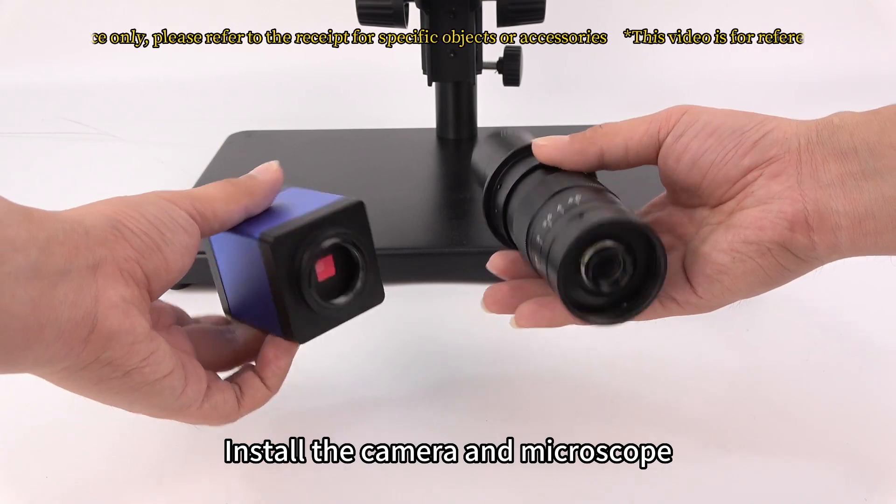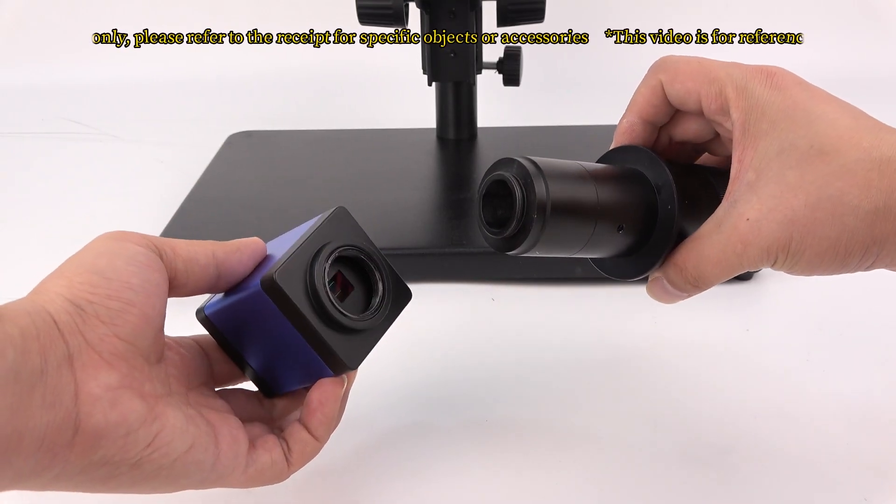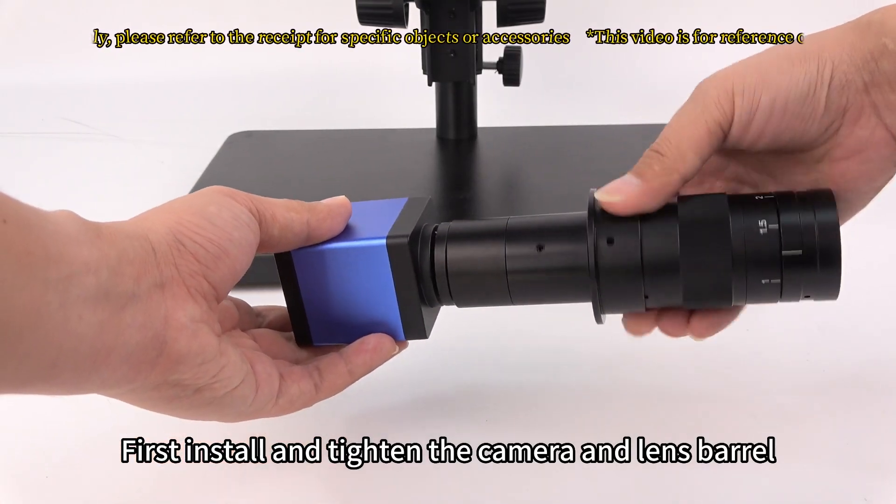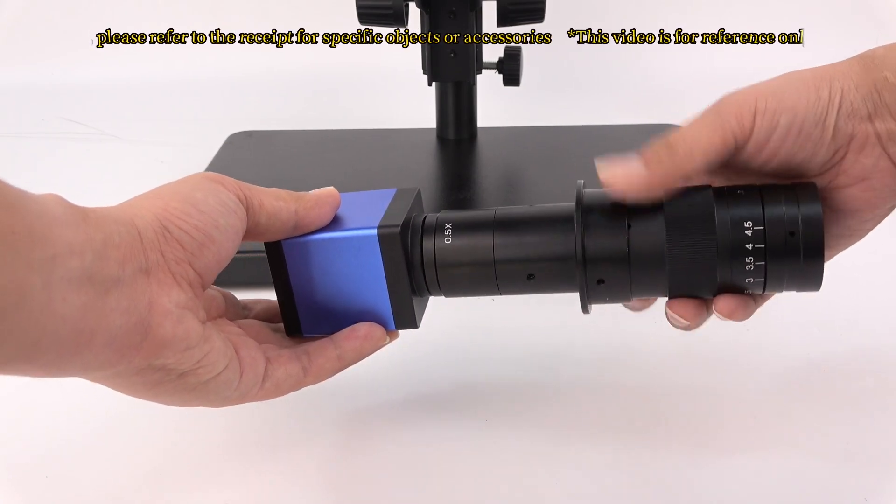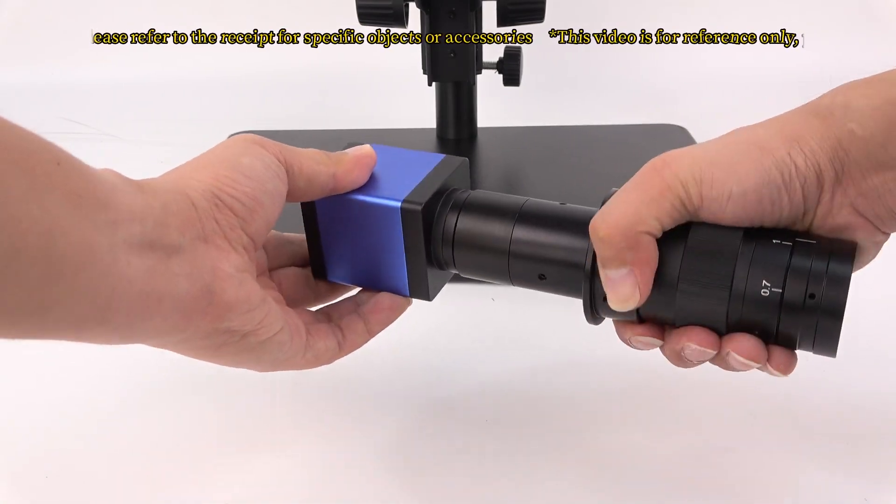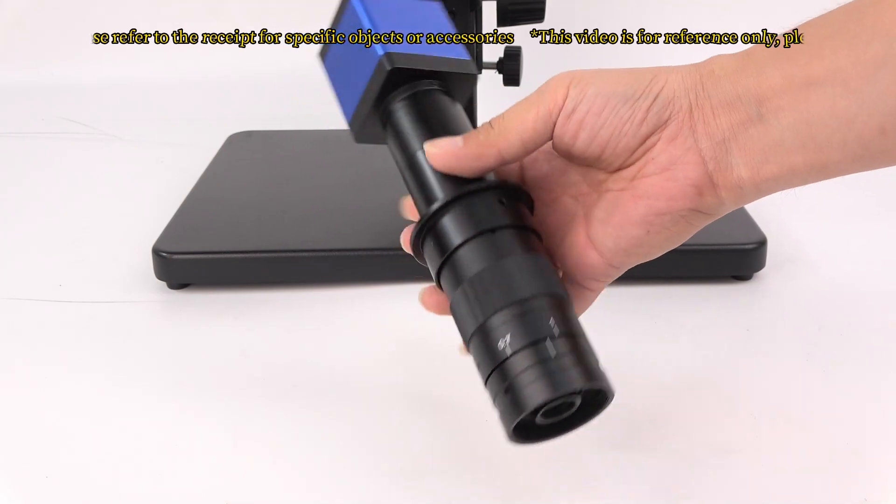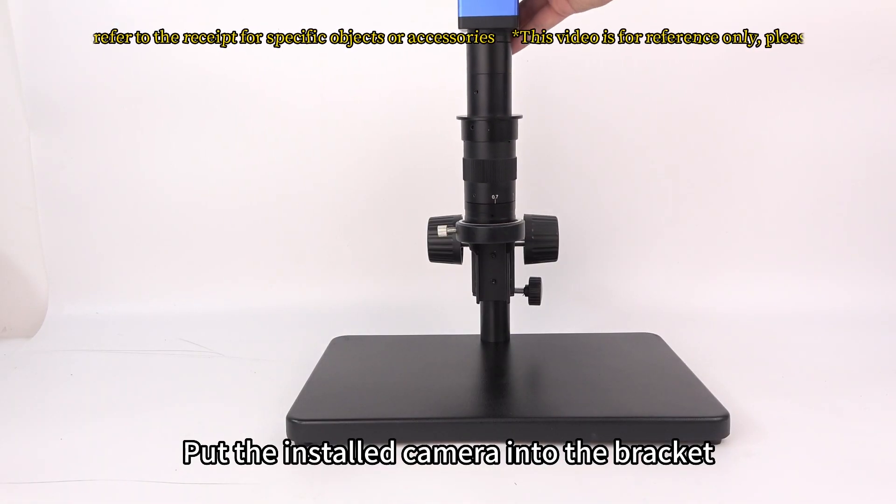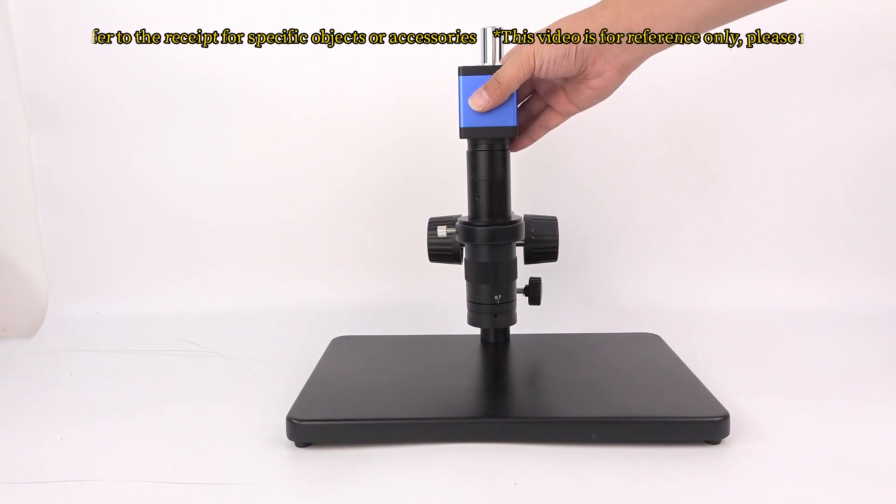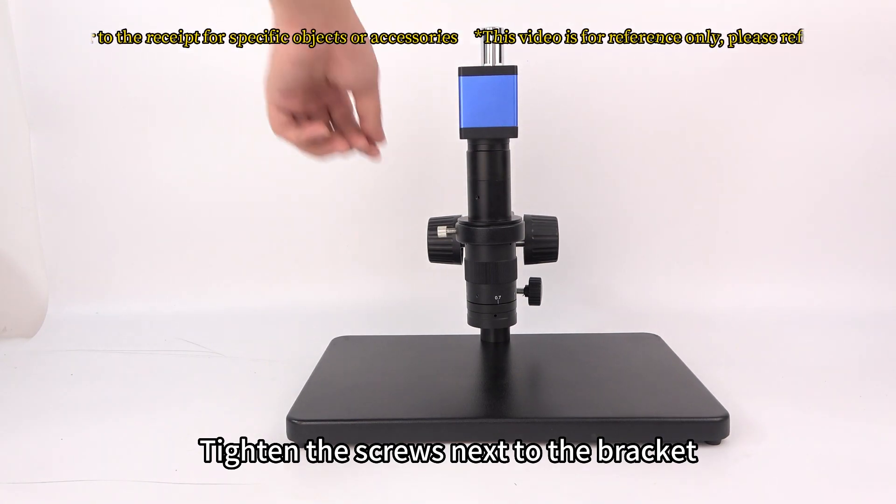Install the camera and microscope. First install and tighten the camera and lens barrel. Put the installed camera into the bracket. Tighten the screws next to the bracket.